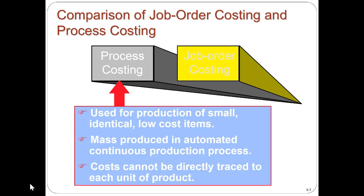Process costing and job order costing are two ways that we can handle manufacturing. In both, we're going to have raw materials, work in process, and finished goods. Process costing is used for the production of small, identical, low-cost items — mass production in an automated, continuous production process where costs cannot be directly traced to each unit of production.